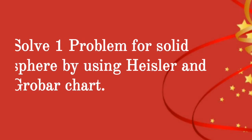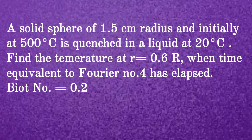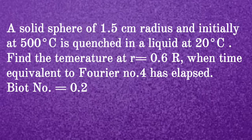We will solve one problem for a solid sphere using the Heisler and Grover chart. A solid sphere of 1.5 cm radius, initially at 500°C, is quenched in a liquid at 20°C. Find the temperature at small r equal to 0.6R when the time equivalent to a Fourier number of 4 has elapsed, given that the Biot number is equal to 0.2.